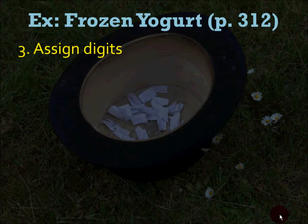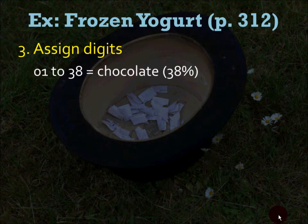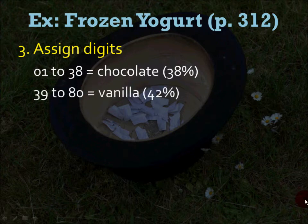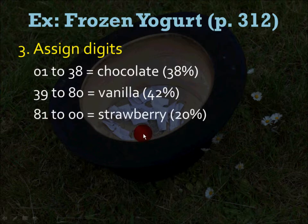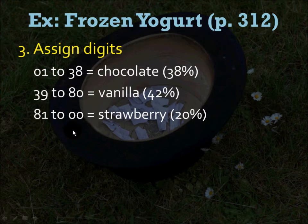Third, assign digits. Since you have a 38% chance of chocolate, assign digits 01 to 38 to chocolate. Assign 39 to 80 to vanilla — that represents 42%. And 81 to 00 for strawberry — that represents 20%. You could also do 00 to 37 for chocolate, 38 to 79 for vanilla, and 80 to 99 for strawberry. It does not matter how you do it as long as the proportions match your assumption proportions.